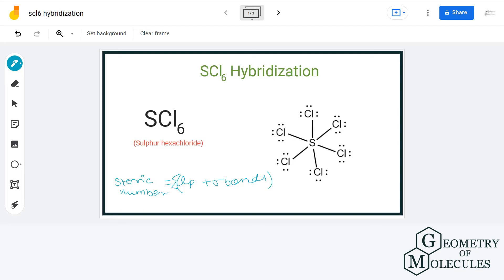This is the Lewis structure of SCL6. We can clearly see that the central atom sulfur has formed 6 sigma bonds with 6 chlorine atoms and has 0 lone pairs of electrons.